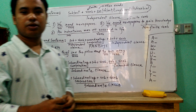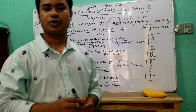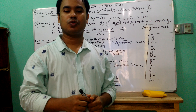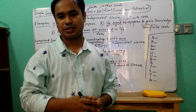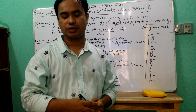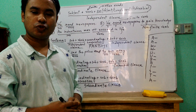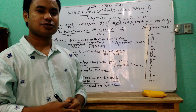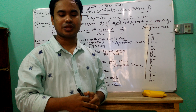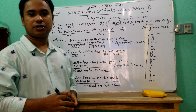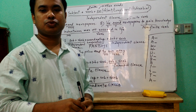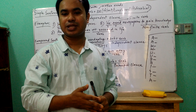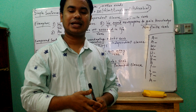Today I'm going to talk about types of sentences according to structure. As you know, there are four types of sentences according to structure in English: simple sentence, compound sentence, complex sentence, and compound-complex sentence. However, today I'm going to teach you three types: simple sentence, compound sentence, and complex sentence.